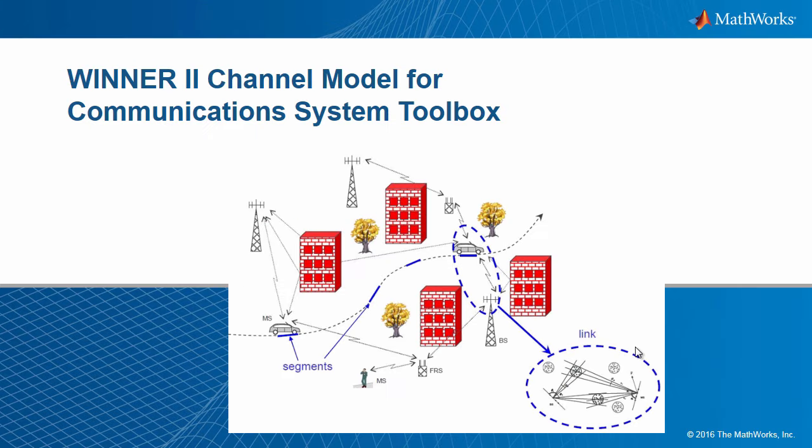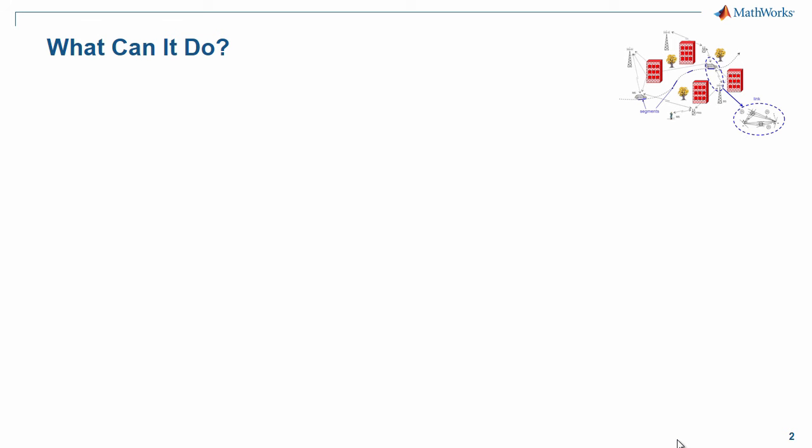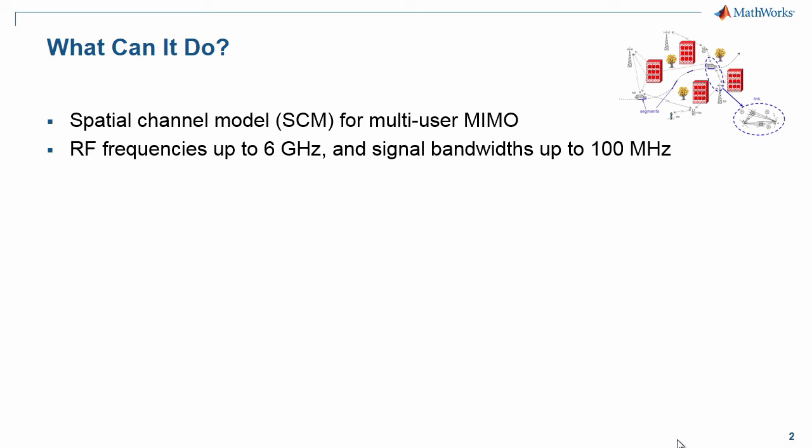This video introduces the Winner 2 channel model for Communication System Toolbox. This add-on software became publicly available in October 2016 and offers new channel modeling techniques. This Winner 2 channel model is a MathWorks adaptation of the well-known Winner software built by a European consortium a number of years ago. It is a spatial model that incorporates antenna array geometry into a time varying impulse response. So what can this software do? It is a spatial channel model for multi-user MIMO where the channel is specified geometrically rather than statistically. RF frequencies up to 6 gigahertz and signal bandwidths up to 100 megahertz. This is a very relevant model for 4G channels and all 5G channels that must be backwards compatible with 4G. It models line-of-sight and non-line-of-sight propagation. Both are important in 4 and 5G.